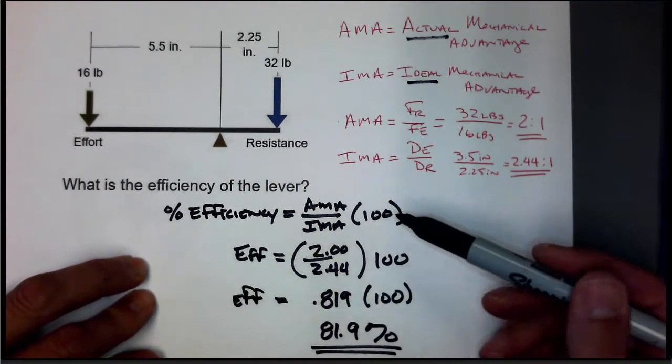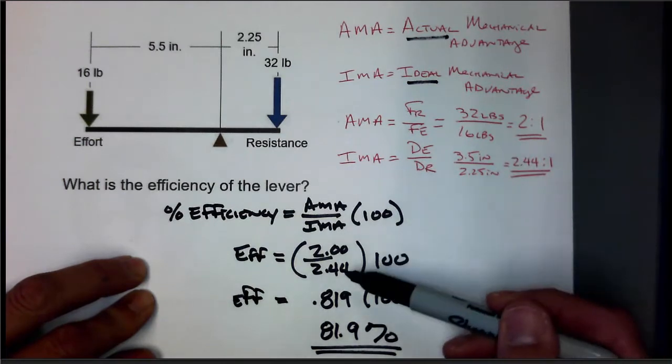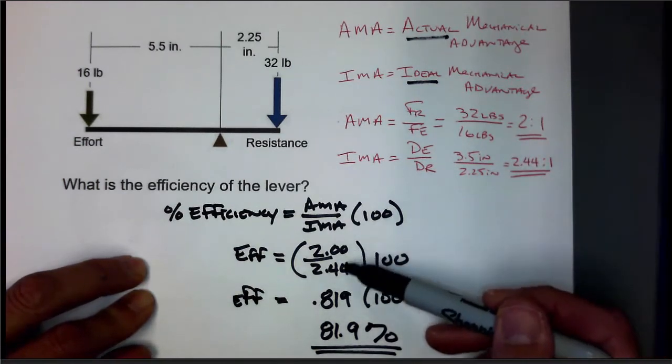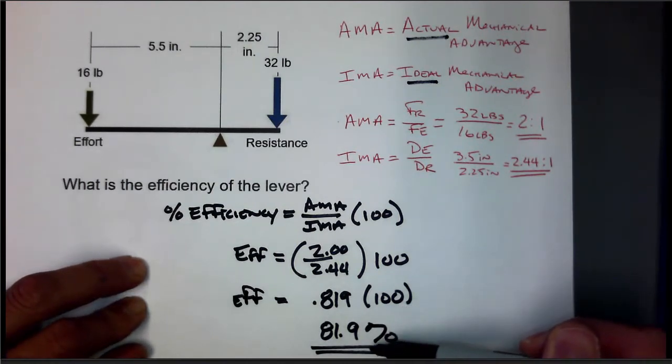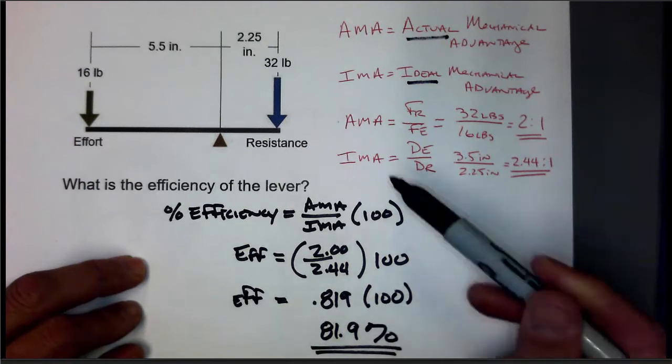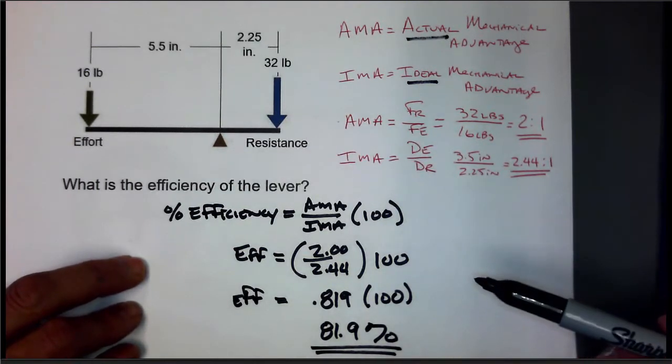So following that math, we took the AMA from above and the IMA from above that we calculated before. We divided those, got a number, multiplied that by 100, and we come up with our answer of 81.9%.